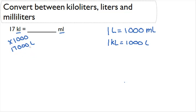Now if we have 17,000 liters and every one of those liters is worth 1,000 milliliters, we can multiply by 1,000 again and find out that 17,000 times 1,000 is going to give us 17 million milliliters.